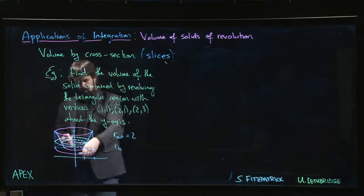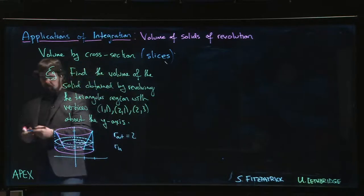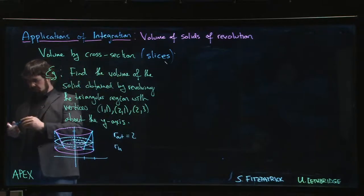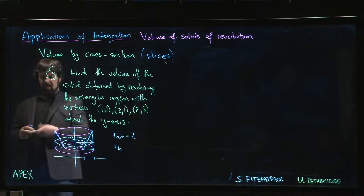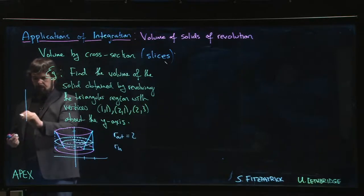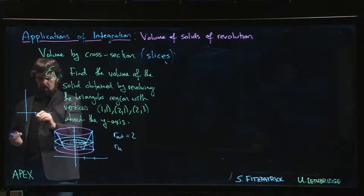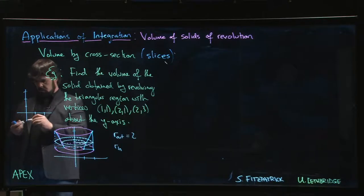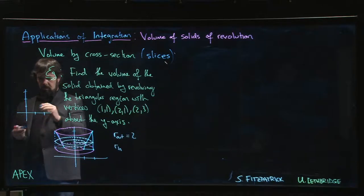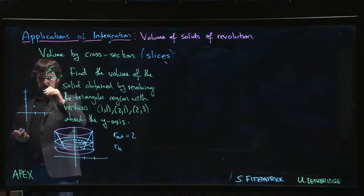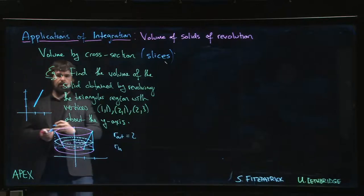Well for the inner radius we've got to look at this line here. So let me redraw that line segment. This picture is getting a little bit cluttered. We've got this line segment going here from (1,1) up to (2,3).